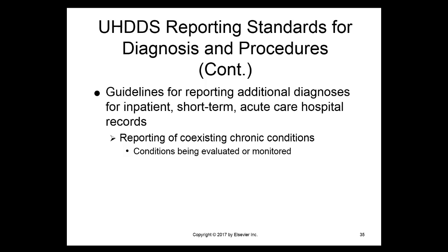In the next example, the patient is admitted with acute appendicitis, and the anesthesiologist's preoperative consultation shows that the patient has a history of COPD — chronic obstructive pulmonary disease. The acute appendicitis and the COPD are both coded. COPD is a chronic condition that affects patients for the rest of their lives, so it certainly has to be monitored. This patient could be compromised from a respiratory standpoint. The fact that they have COPD does not change the principal diagnosis of acute appendicitis, but it is a chronic condition that we also code.